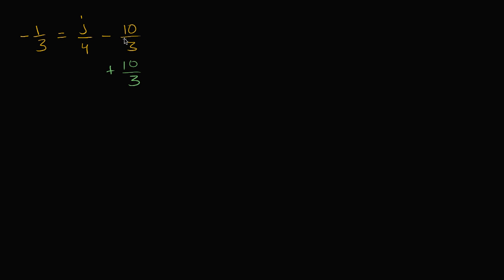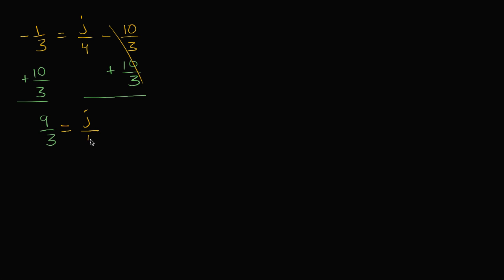If this is equal to that, in order for the equality to remain true, whatever I do to one side I have to do to the other as well. So I have to add 10/3 to both sides of the equation. On the left hand side, I'm going to have negative 1/3 plus 10/3, which is 9/3. And on the right hand side, the negative 10/3 and the positive 10/3 cancel out to zero, and I'm just left with j/4.